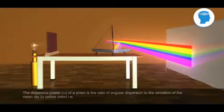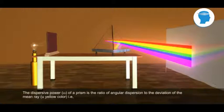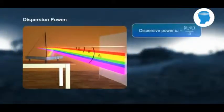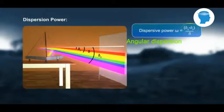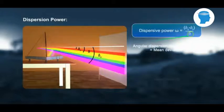Dispersion Power. The dispersive power ω of a prism is a ratio of angular dispersion to the deviation of the mean ray, yellow color. That is, dispersive power ω = (δ_V - δ_R) / δ, where δ_V - δ_R stands for angular dispersion, and δ stands for mean deviation.